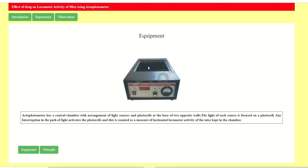This interruption is counted as a measure of horizontal locomotor activity of mice kept inside the chamber. The light is constantly passing through to the photo receivers. When you put an animal in the chamber and it moves, the beam is interrupted, and the photo cell receivers count this — measuring horizontal locomotor activity.